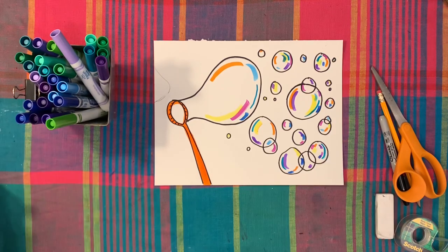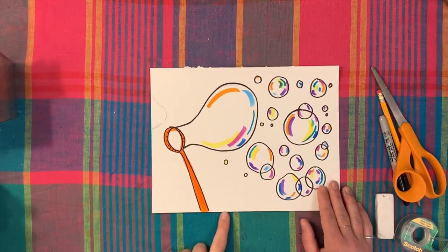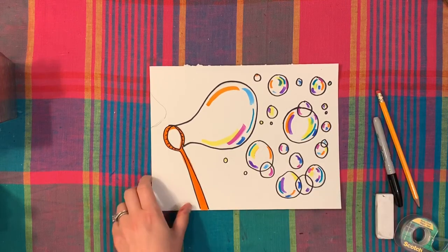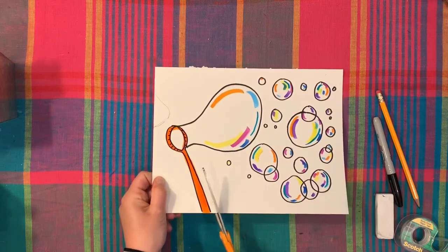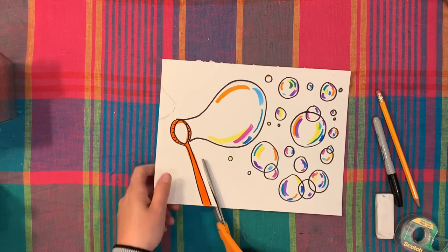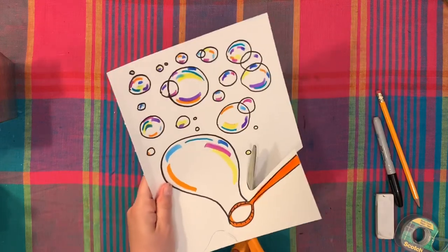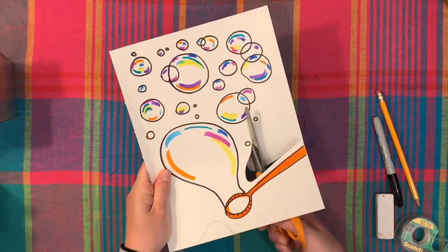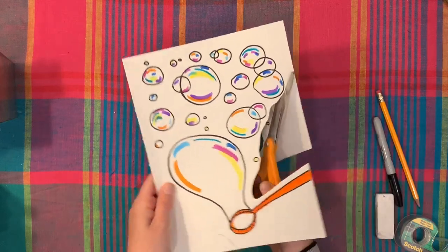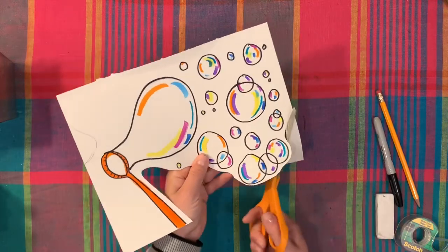So now we're going to cut out our bubbles. So I am going to take my paper and I'm going to cut around my bubbles, leaving a white edge. So when I start, I'm going to not cut on my black line. I'm going to cut next to it, and I'm going to have to rotate my paper and cut out all of my bubbles. This is also a great time if you have a bubble that you think just doesn't belong in your artwork. You can cut it out.